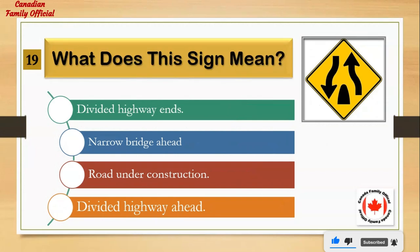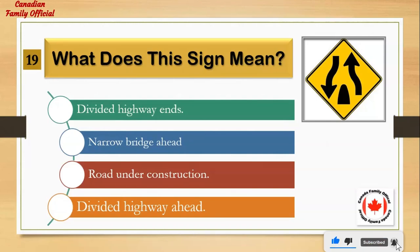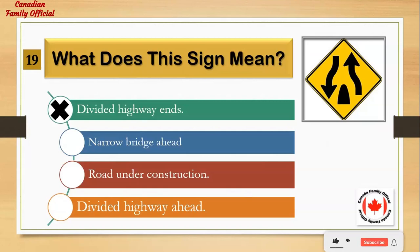What does this sign mean? Number 1: divided highway ends. Number 2: narrow bridge ahead. Number 3: road under construction. Number 4: divided highway ahead. And the answer is: divided highway ends.